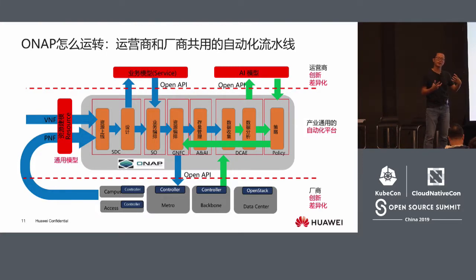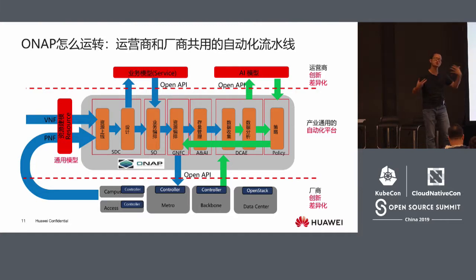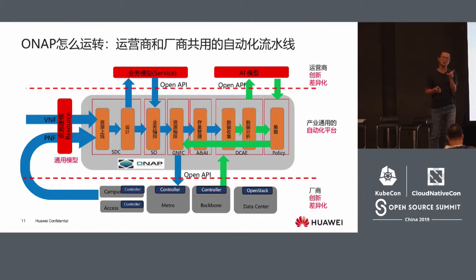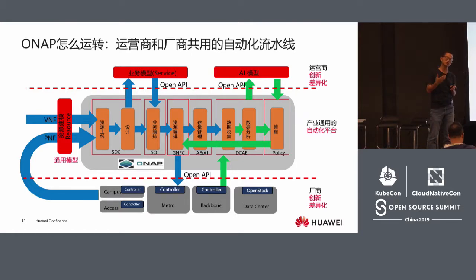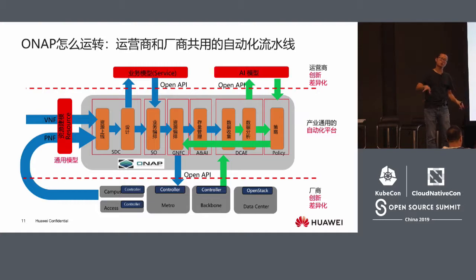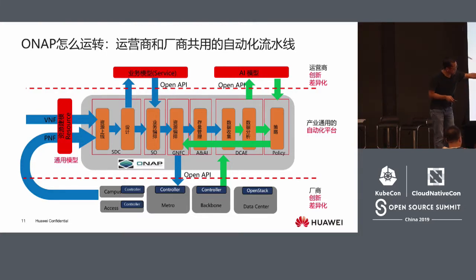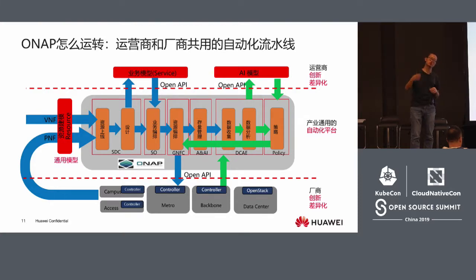Here you have the business design and business model, and then you convert them into a product — for example, an enterprise connectivity product which you can subscribe to. At the beginning, you might use an API. Once the system receives the request, it will trigger the service platform, which will pull different kinds of resources — you need a VM, you need computation — and then pull out the controller to serve end-to-end.